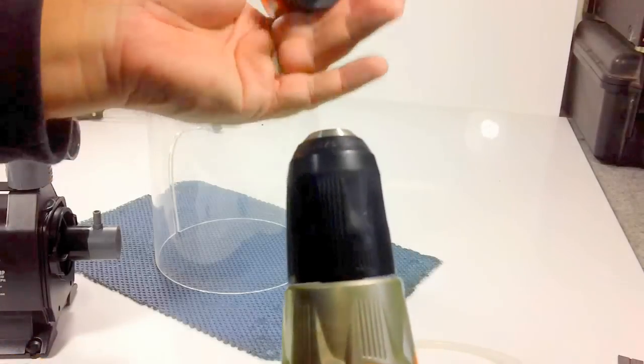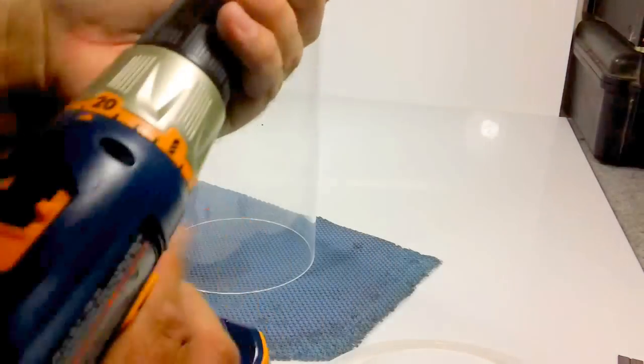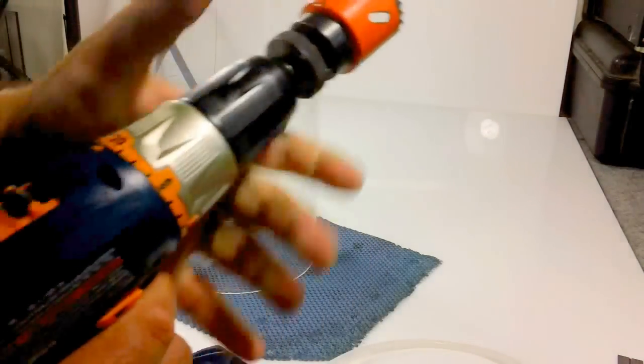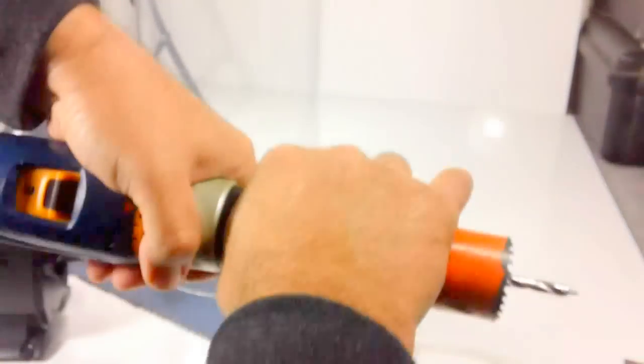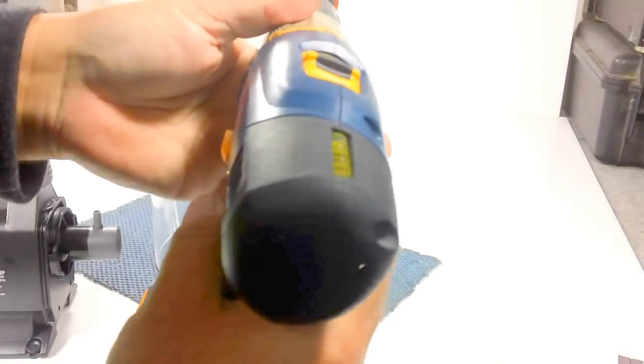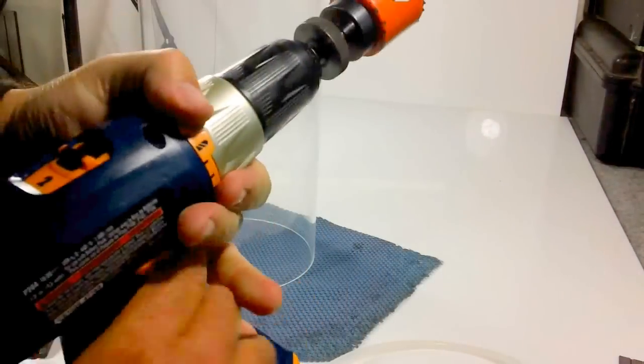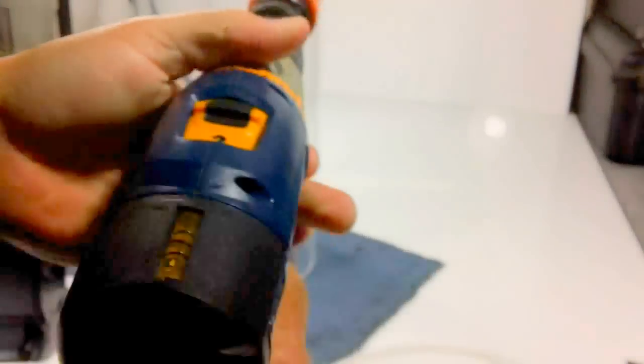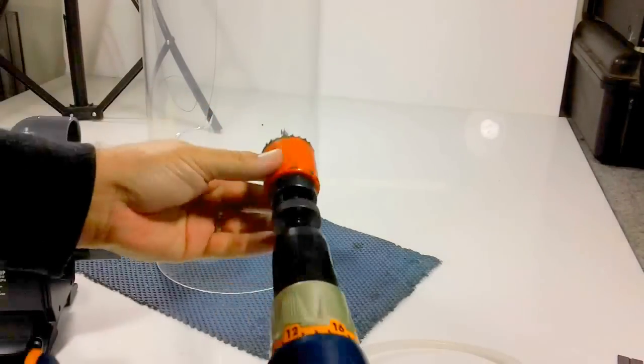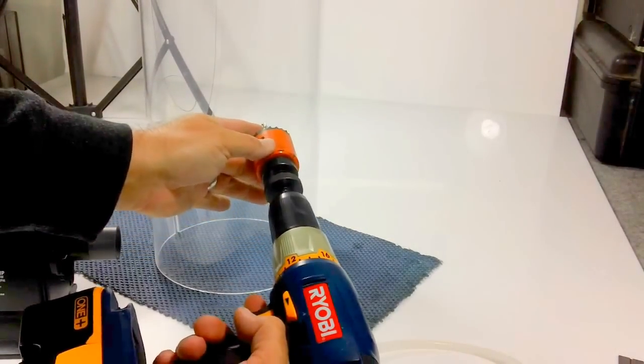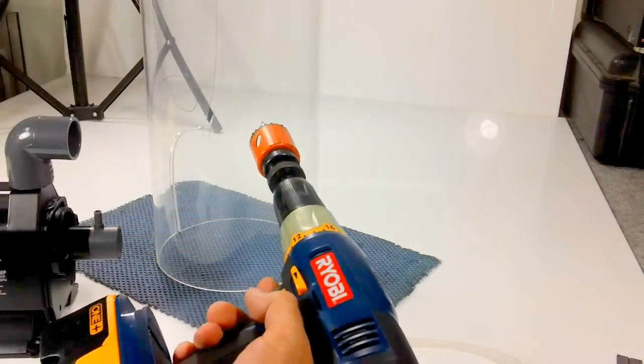Again, you take that, this has a three-eighths inch shank, put it on the drill, get the bit attached, make sure it's nice and tight. And then you find your point, you take the tip of your drill bit and stick it right on that point.